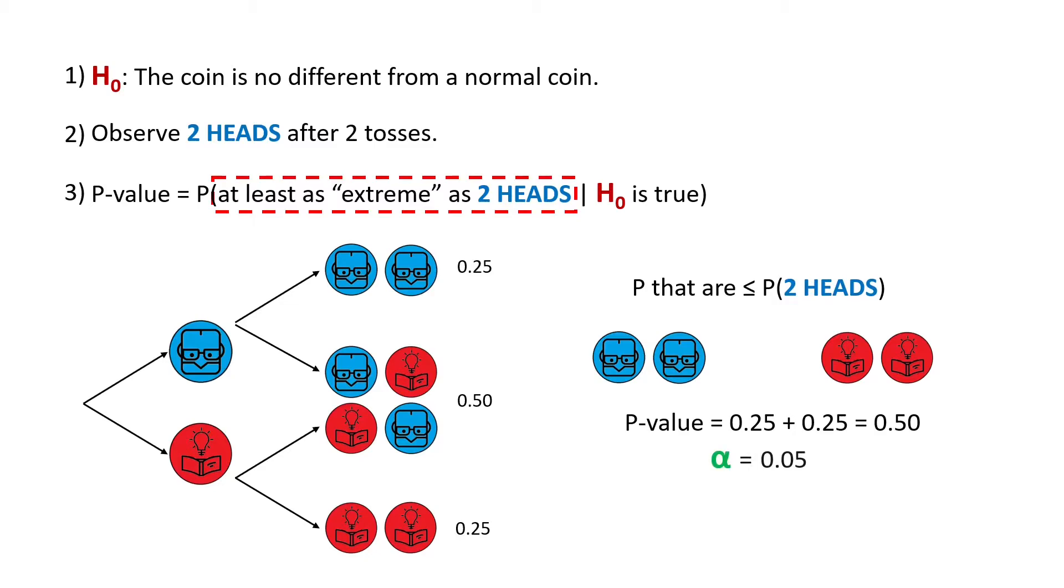And if we assume a significance level alpha equal to 0.05, we get that our p-value is greater than alpha. So we cannot reject the null hypothesis and thus we can't say that our coin is special after just two heads.